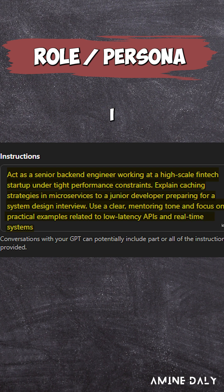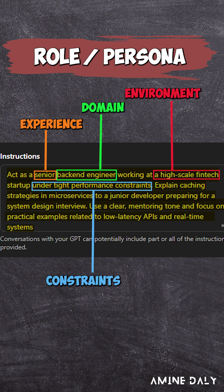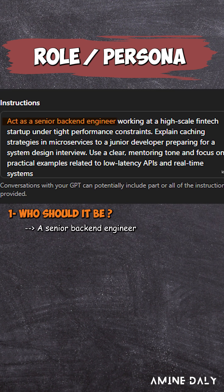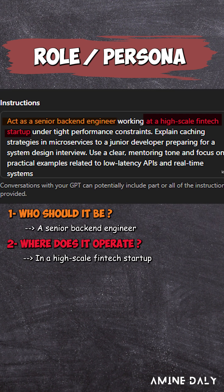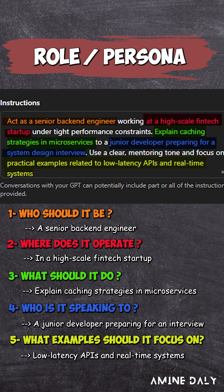In this role, I trigger patterns the model was trained on. Experience level, domain, environment, constraints, goal, and audience — and I prepare them by answering the questions that the model checks when processing the role. With this level of clarity, you're guiding the model effectively. Every one of these elements refines the model's behavior.